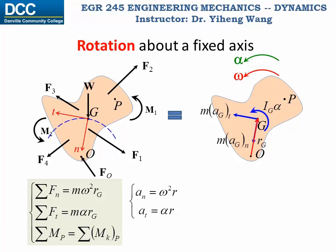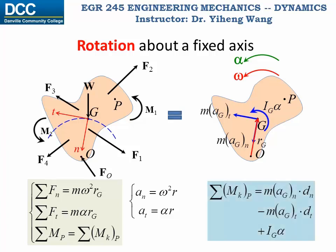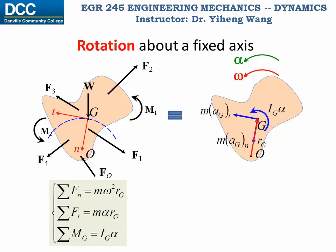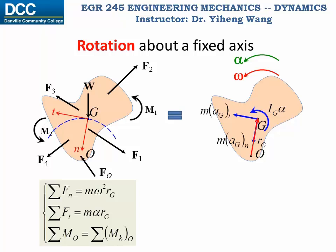We can now rewrite the set of equations accordingly. The last equation remains the same: the resultant moment about an arbitrary point P equals the total kinetic moment about P. This is calculated by treating M·AGT and M·AGN as inertial forces, computing their moments about point P through their moment arms, and treating IG·alpha as a free couple moment. We can summarize the resultant moment about point G, giving: resultant moment about G equals IG·alpha. We can also summarize it about point O, the center of rotation, which equals the total kinetic moment about point O.